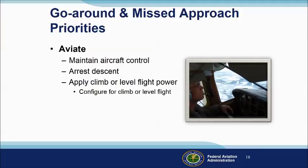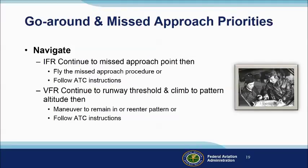When missing an approach or going around, you're usually close to the ground, so your first priority is to maintain aircraft control, arrest your descent, apply power to maintain altitude or climb as appropriate, and configure the airplane for climb or level flight. With the aircraft under control and not descending, it's time to navigate. If IFR, continue to the missed approach point, then fly the published missed approach procedure or follow ATC instructions. VFR, continue to the runway threshold while climbing to pattern altitude, then maneuver to remain in or re-enter the pattern.